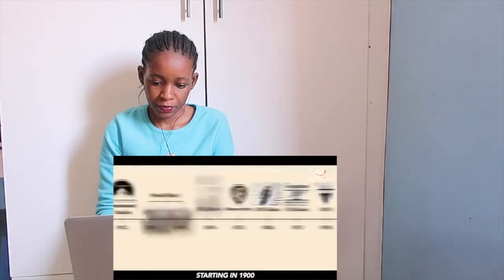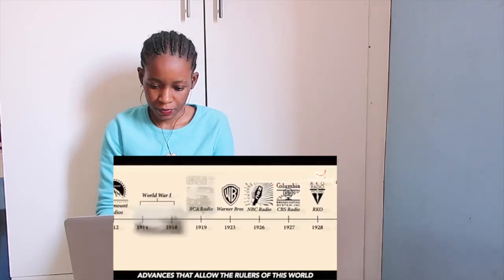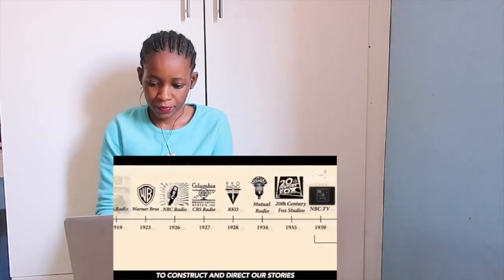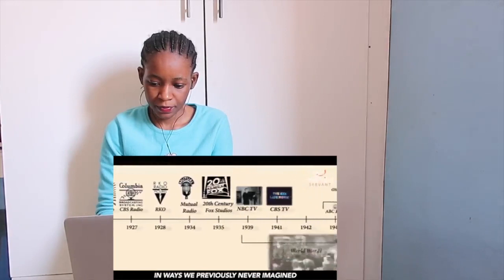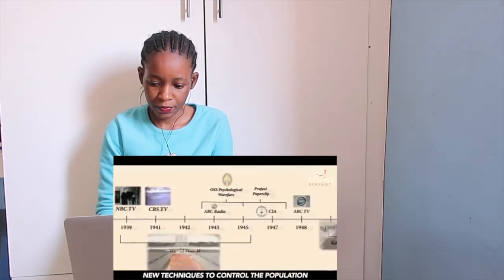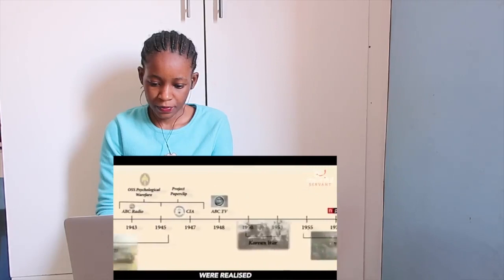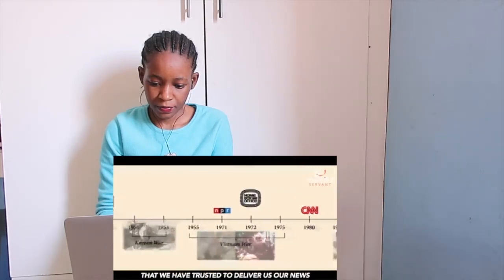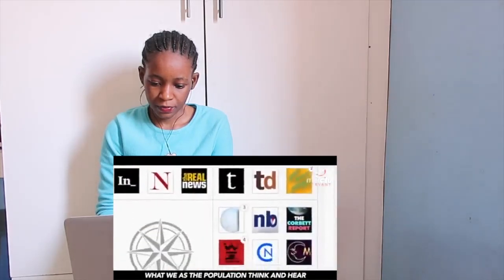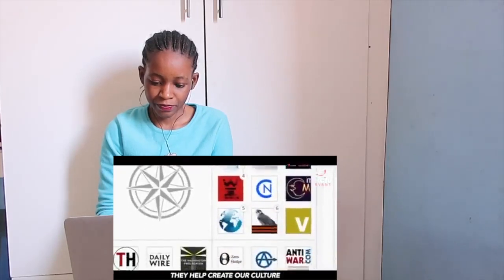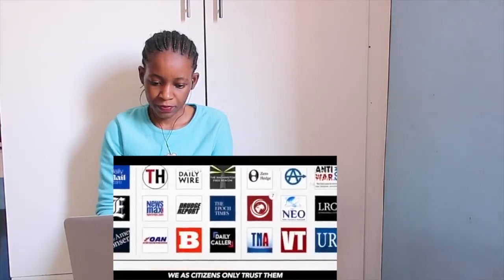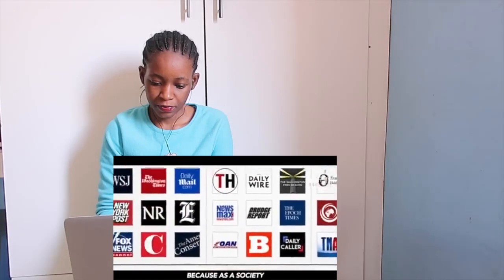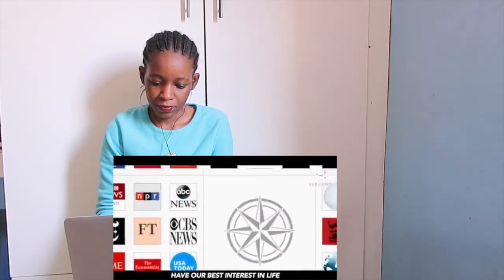Starting in 1900, we entered a previously unimaginable time of modern technology. Advances that allowed the rulers of this world to construct and direct our stories in ways we never imagined. As a result, new techniques to control the population were realized. These are the people from companies we have trusted to deliver us our news and tell our stories.